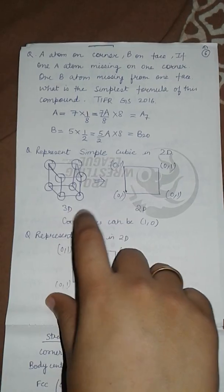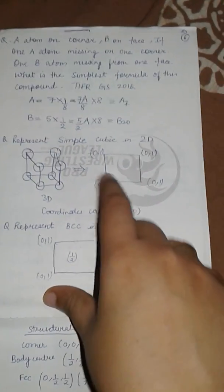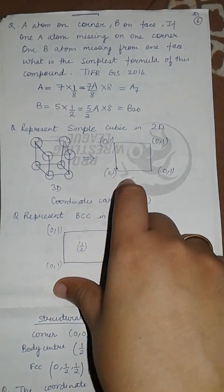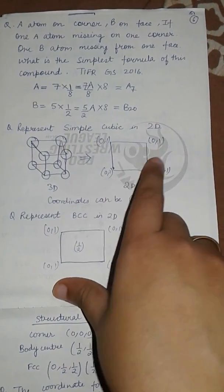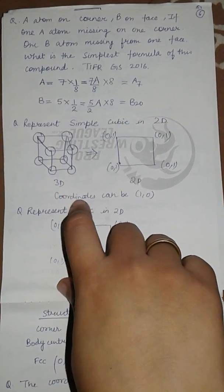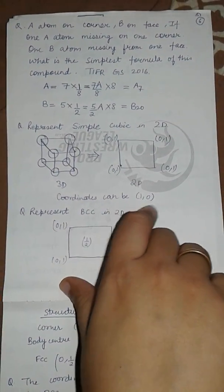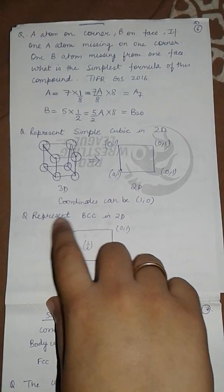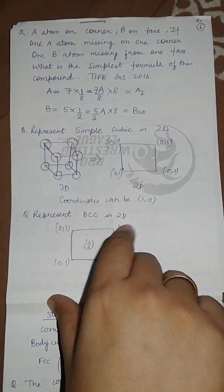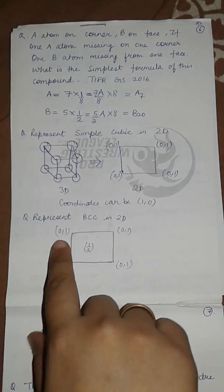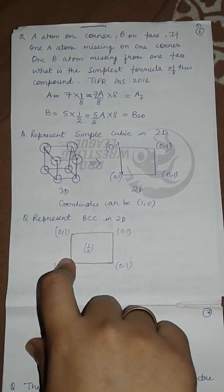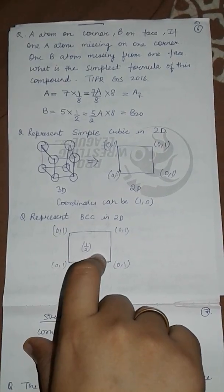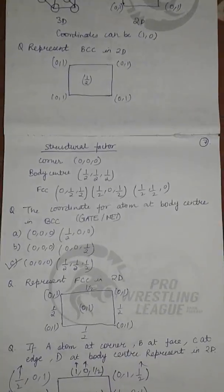To represent simple cubic in two dimensions, atoms are placed at all four corners with coordinates zero-one, zero-one, giving a 2D square arrangement. For BCC in 2D, the arrangement is the same as simple cubic but with an additional atom at the body center represented by the coordinate one-half.